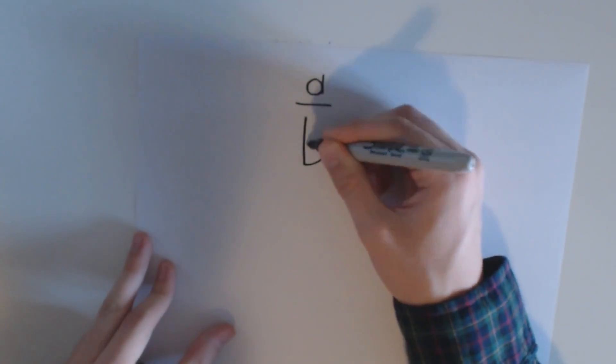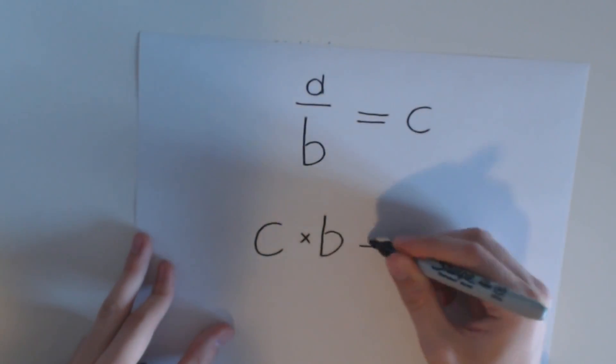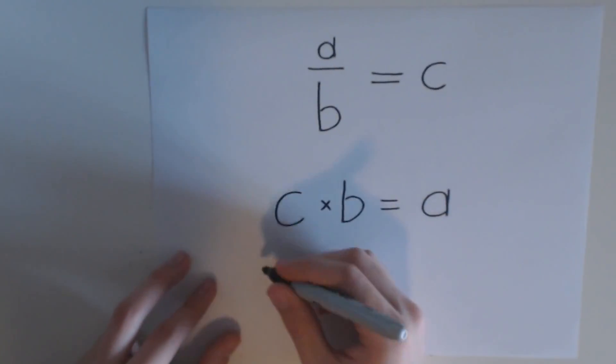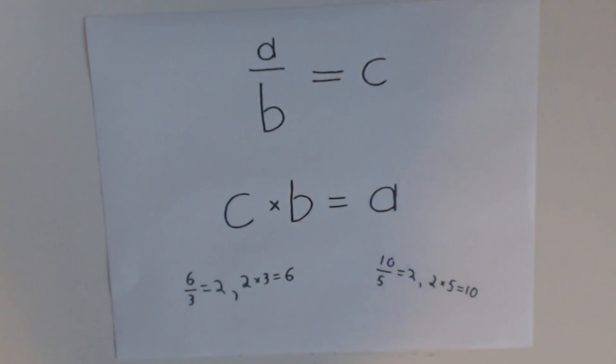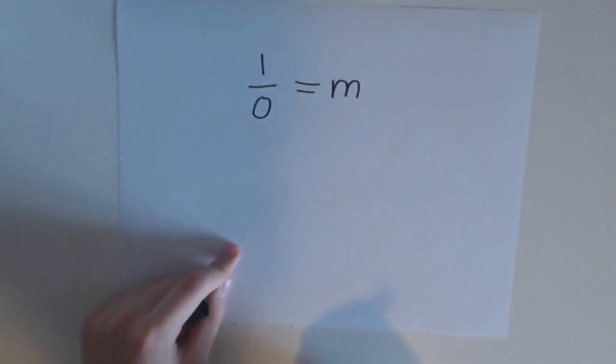Here's a different technique. For any expression a divided by b equals c, you can reverse it to say c multiplied by b equals a, since multiplication is the inverse of division. Now let's try it with the expression 1 divided by 0 equals something. We'll call it m.